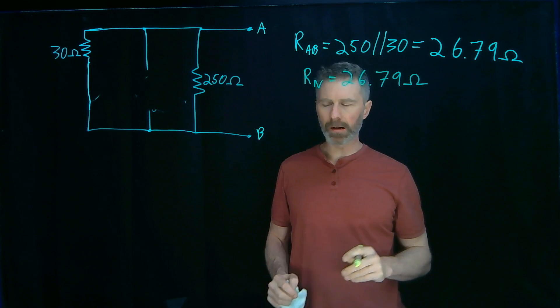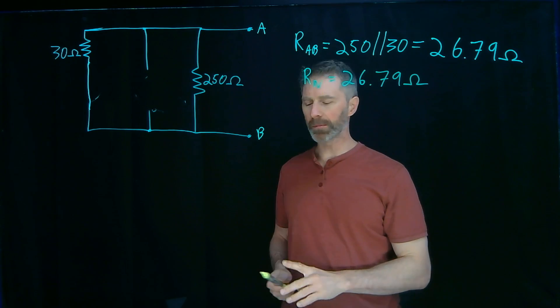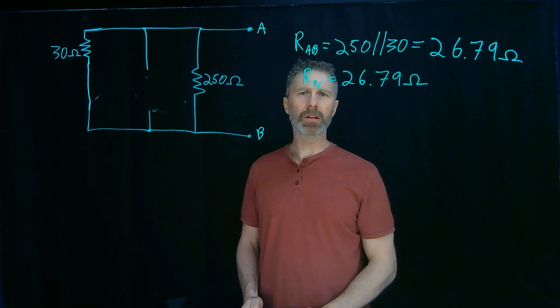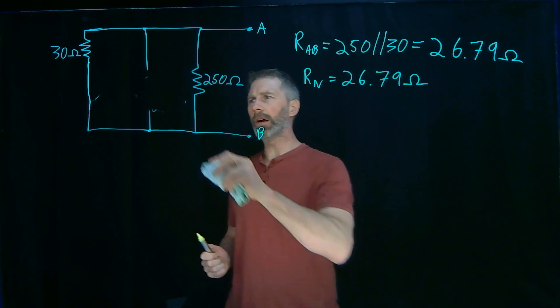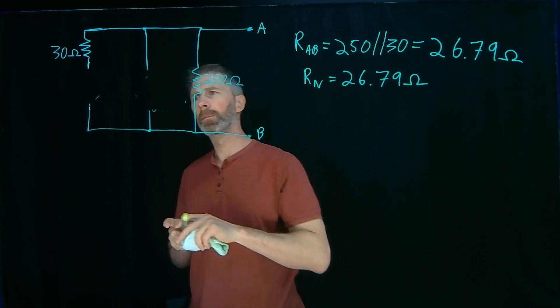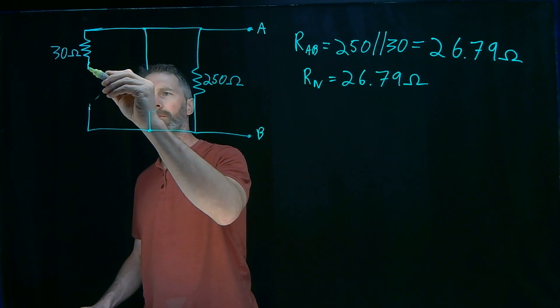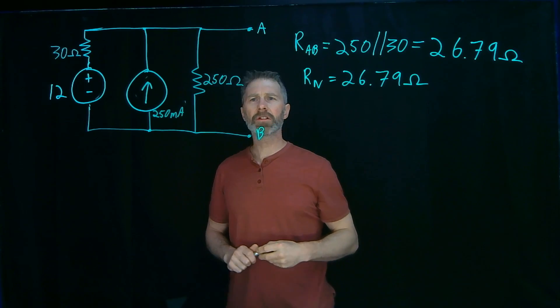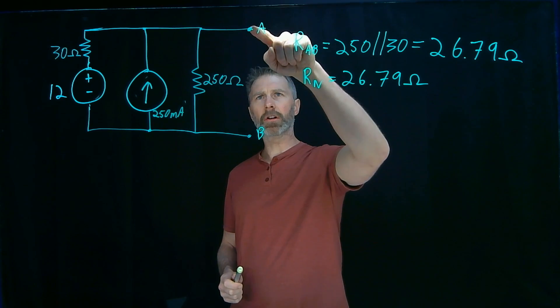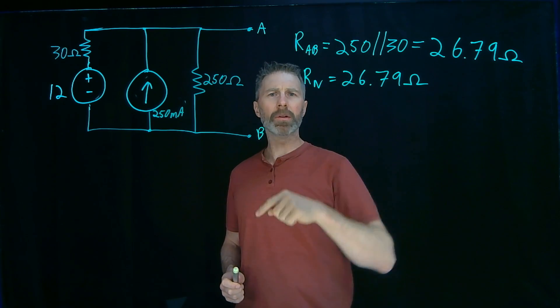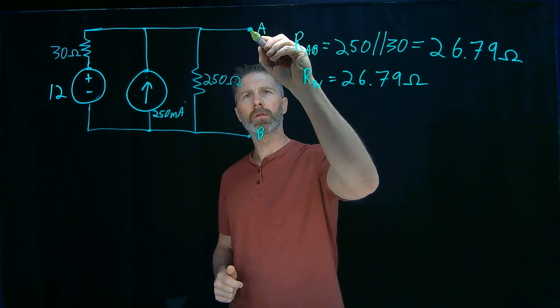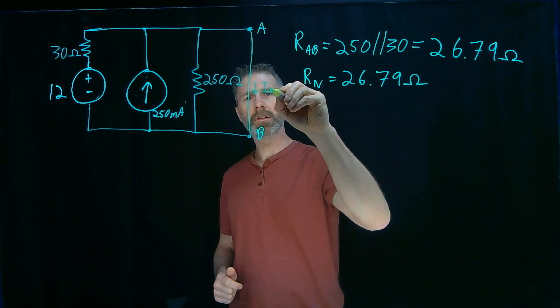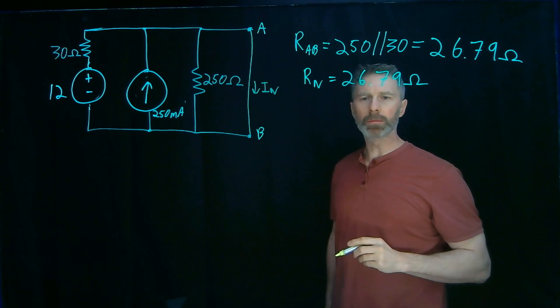The second step, or I guess I'm up to the fourth step now, is to figure out what the current source is, what the Norton current source is. To do that, I replace the sources. And then determine what the short circuit current is if I was to short points A and B together. So if I short A and B, my Norton current is that current flowing between A and B.